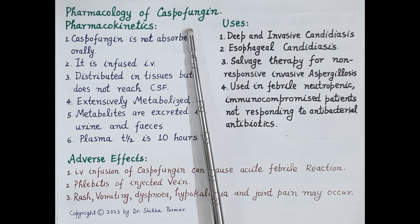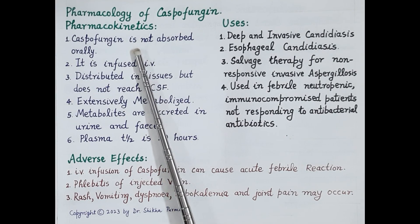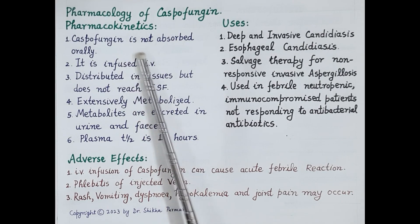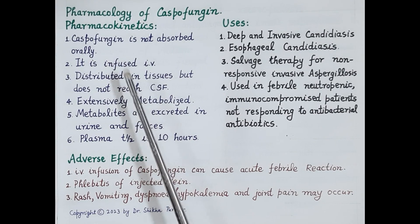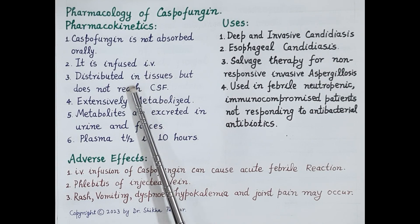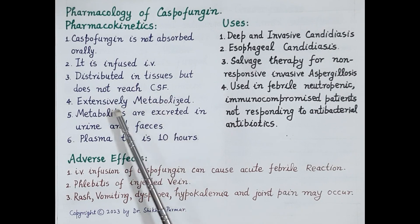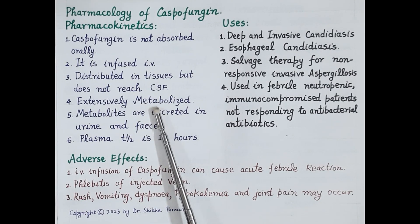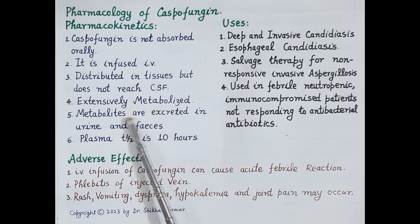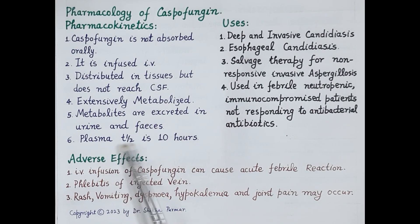Let's study the important pharmacokinetic features of caspofungin. Caspofungin is not absorbed orally and is given by slow IV infusion. It is distributed in the tissues but does not reach the cerebrospinal fluid. It is extensively metabolized and the metabolites are excreted in the urine and feces. The plasma half-life of caspofungin is 10 hours.